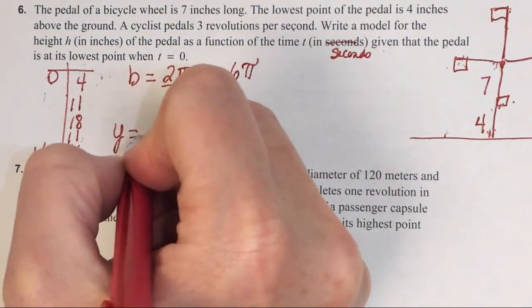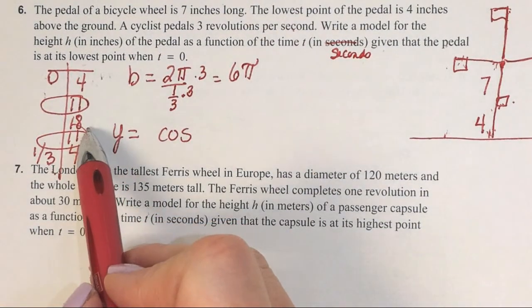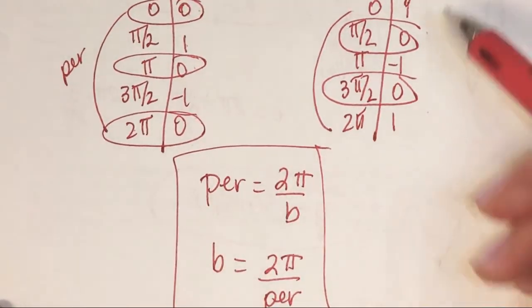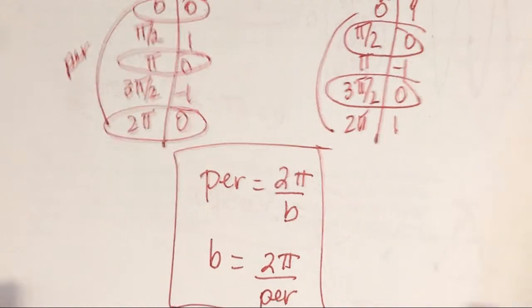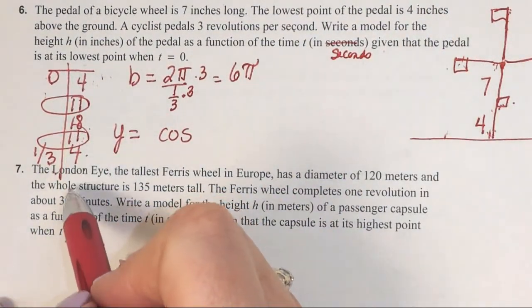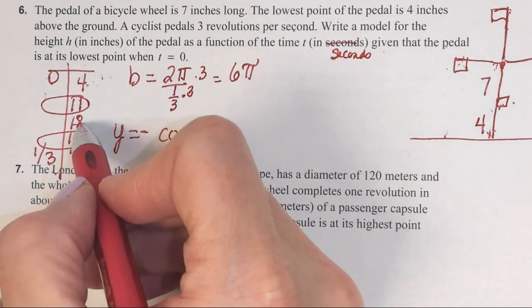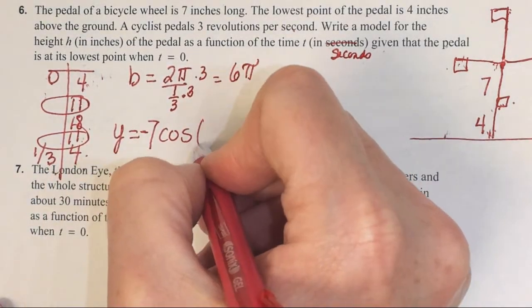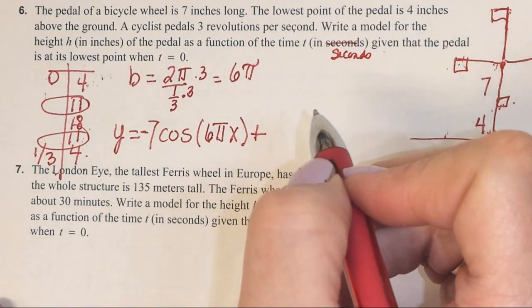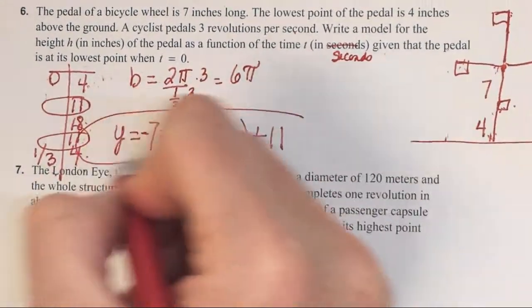What did we say this is, sine or cosine? Cosine. Let's look at the pattern: up, up, down, down. Is that the way cosine is supposed to go? Cosine goes down, down, up, up. This is going up, up, down, down. So what do we have to have in front? Negative. What is the amplitude? How far is it between these? 7. B is 6πx, and then plus how much? Not 4, not 7. 11. These are supposed to be our zeros, so plus 11. That's the equation.